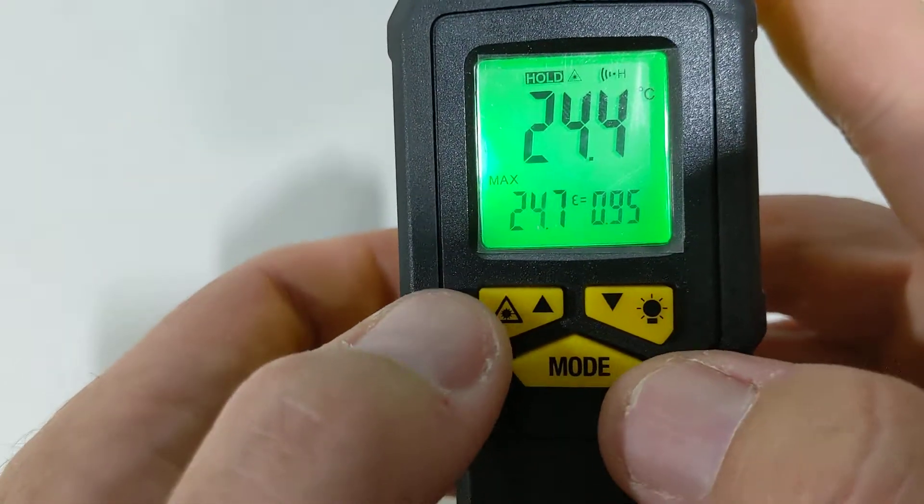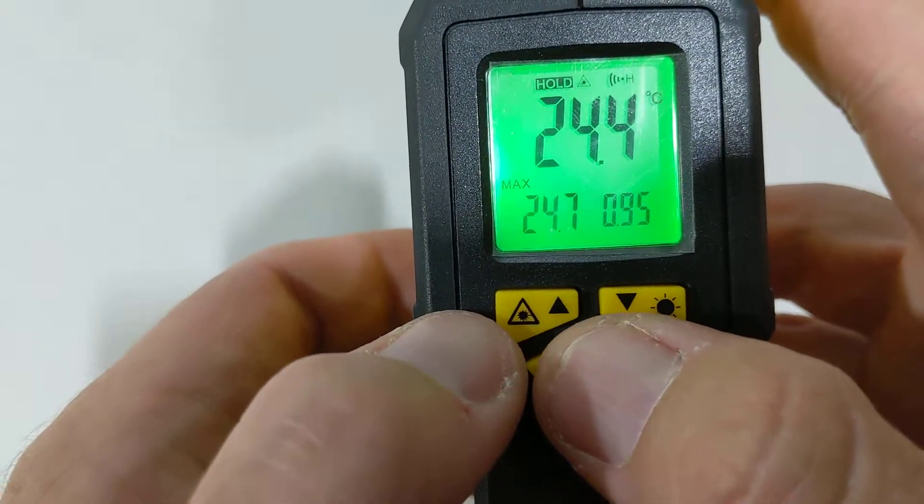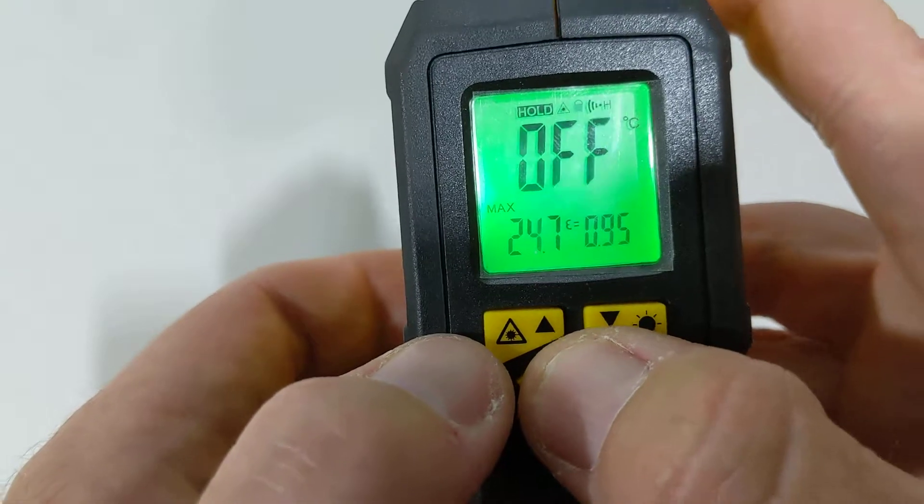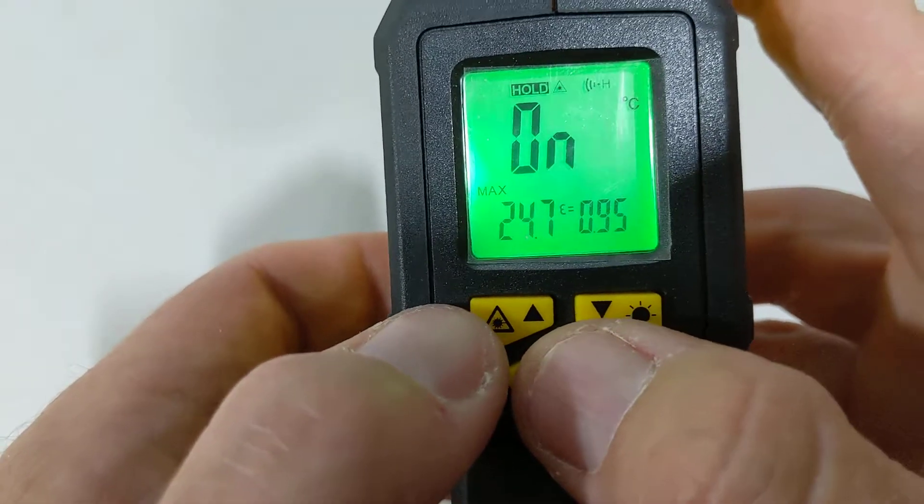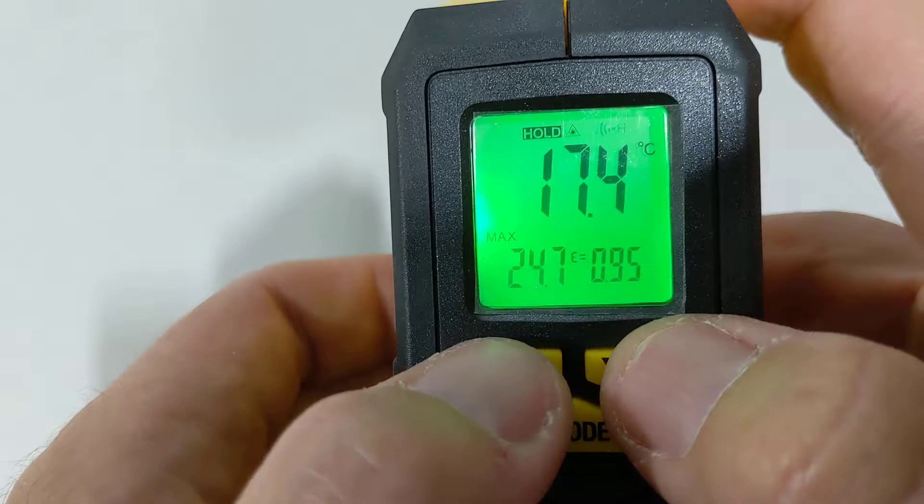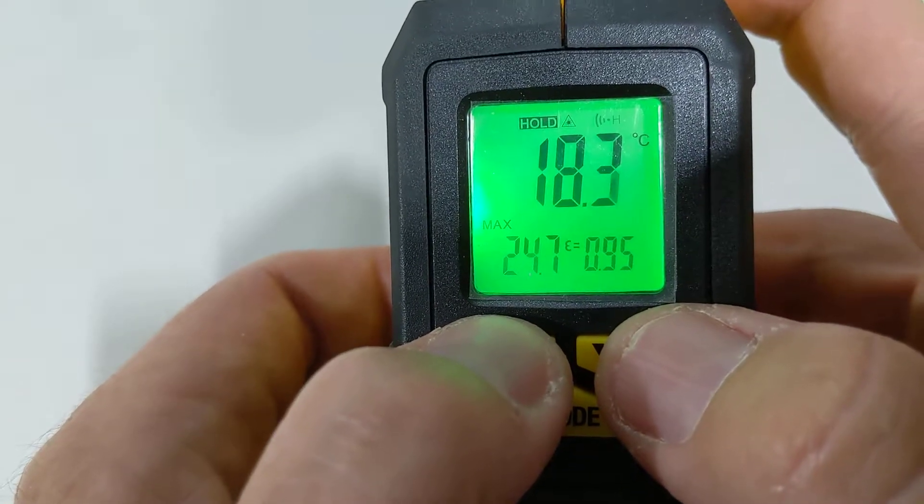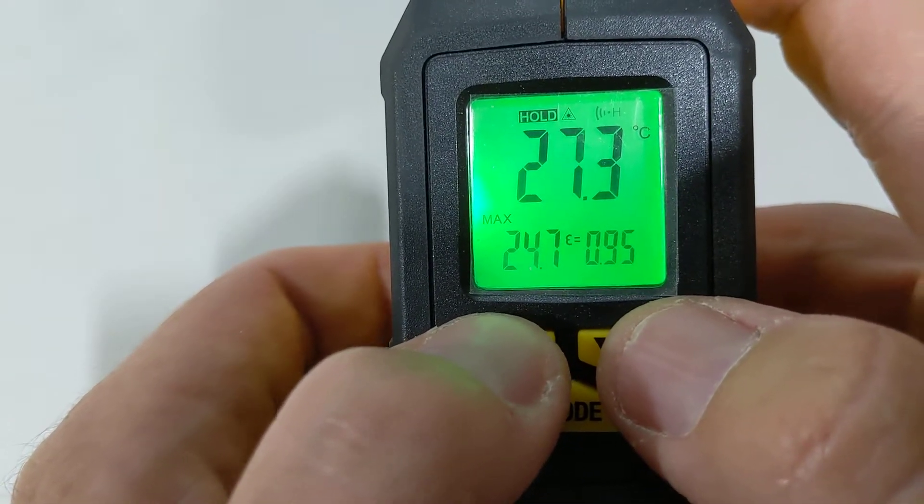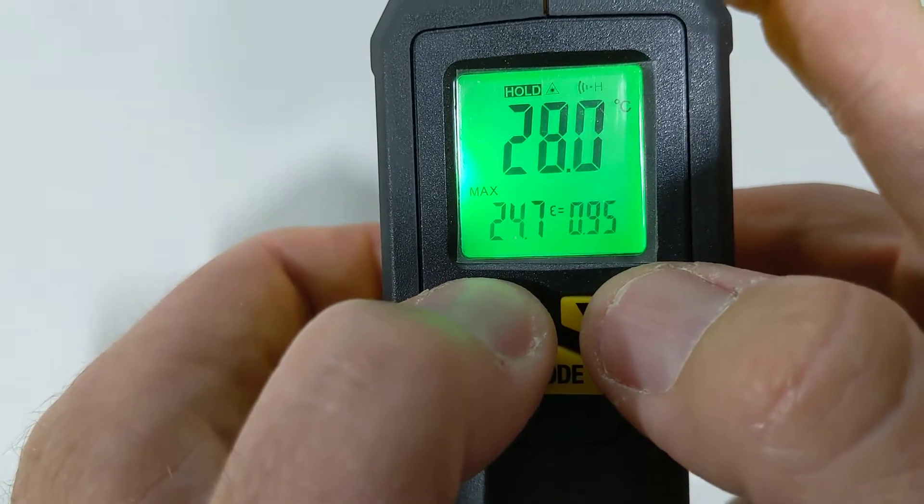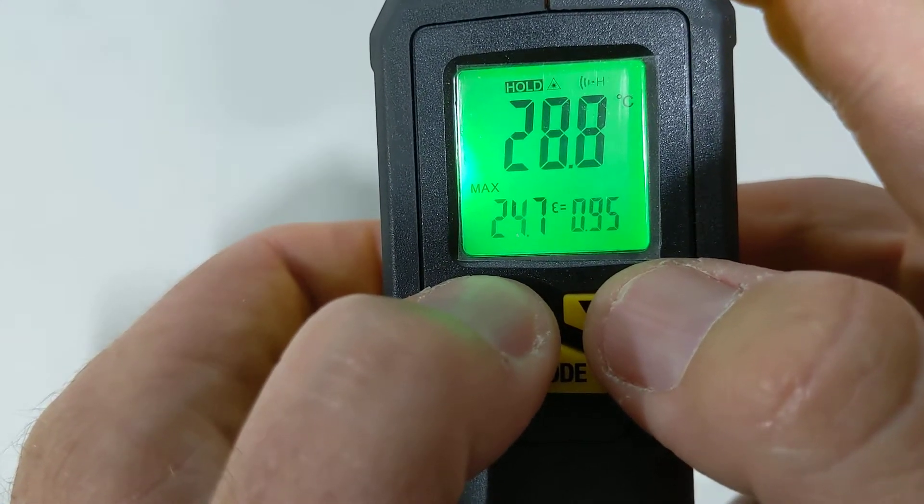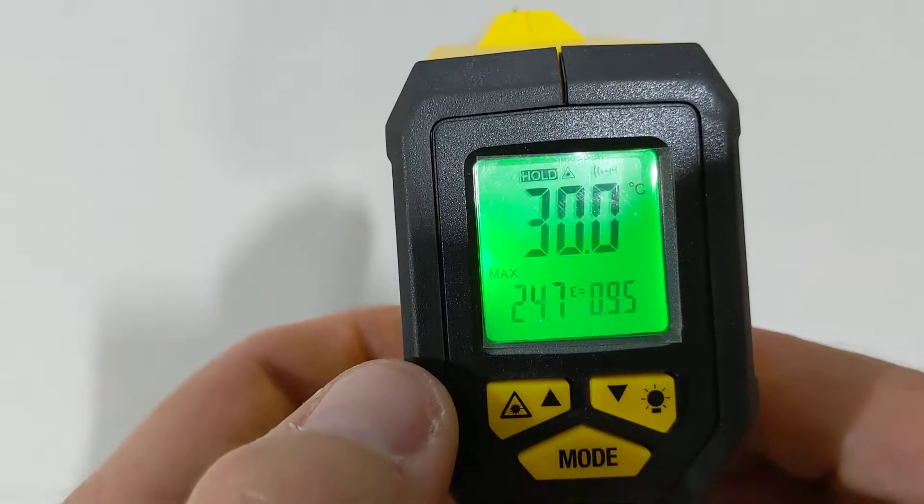And now it glows red because it hasn't met 17. It's reading at 24. So then what we'll do is we'll change that. We'll go to our mode button. Press it again, press it again, press it again. And now we'll check our temperature, get it up. We'll get it up to 30.